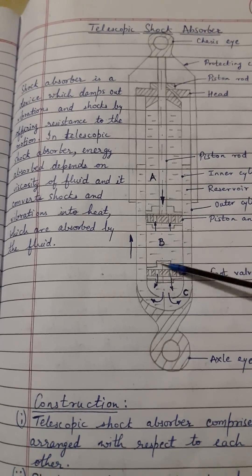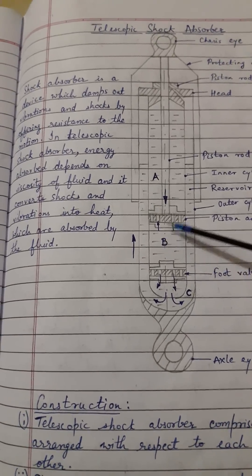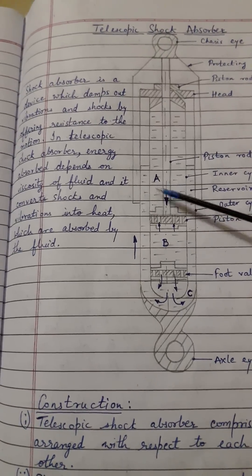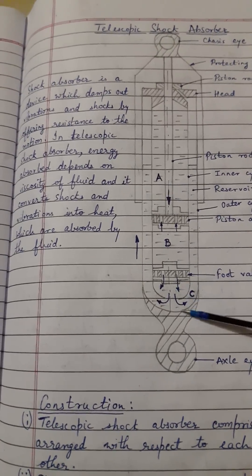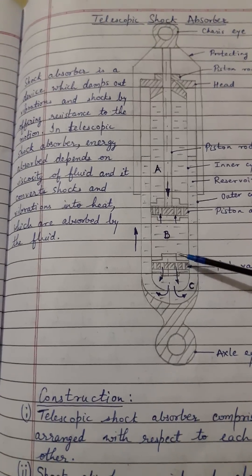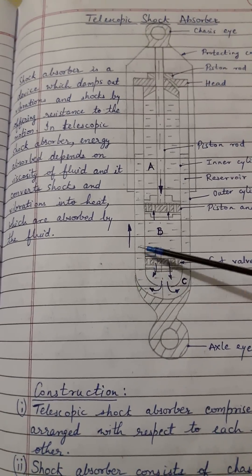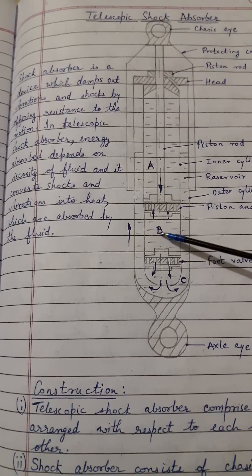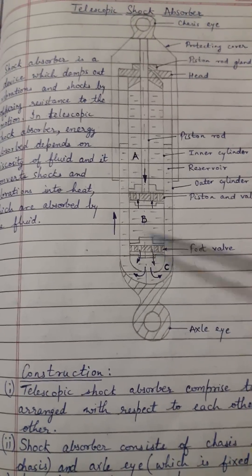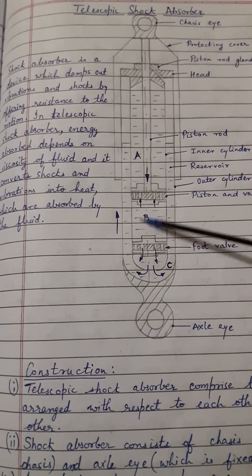This is how, when there is a pressure buildup, the fluid goes to chamber A and annular space C. Whenever there is a pothole in the road, the bottom eye moves downward and the pressure in chamber B decreases.